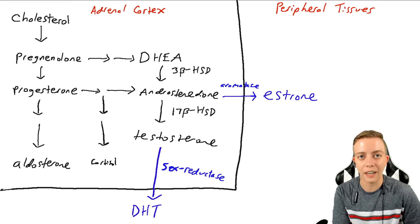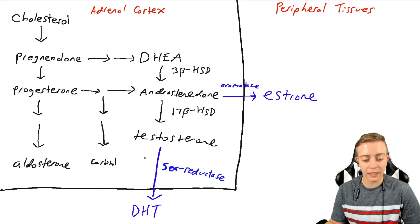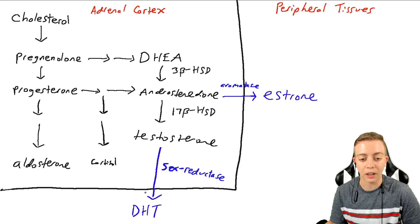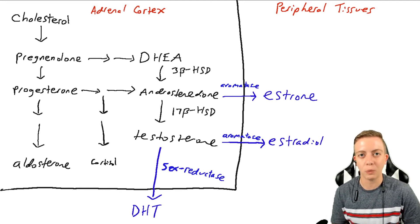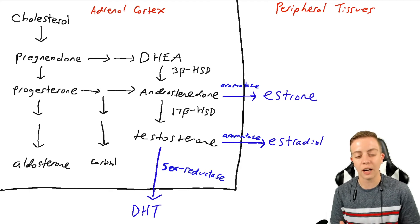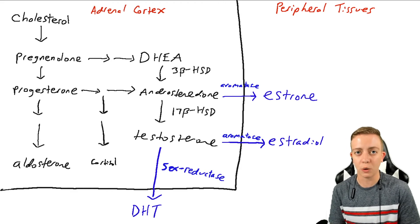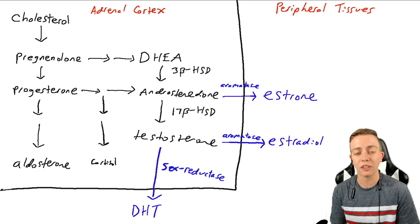Testosterone, if it is not being turned into DHT by 5-alpha reductase, can also be converted by aromatase to estradiol. Estradiol is the most potent form of estrogen — it is what we typically think of when we think of feminizing hormones. However, this pathway is not very significant because most testosterone is produced either in the testes or by the theca cells in the ovary.